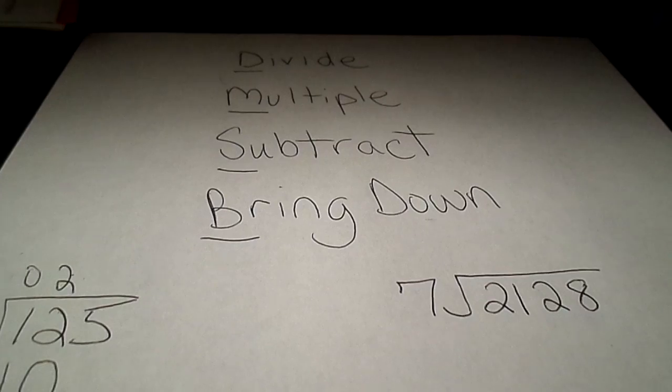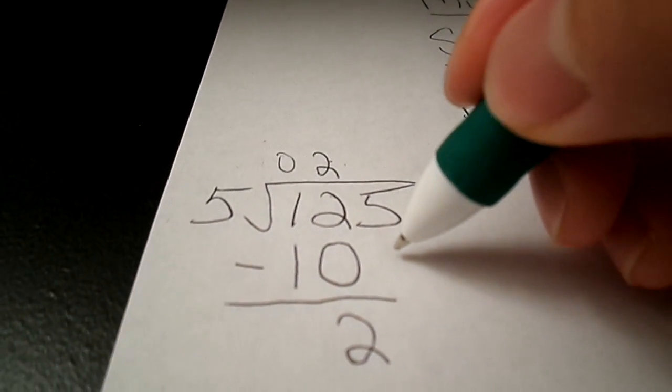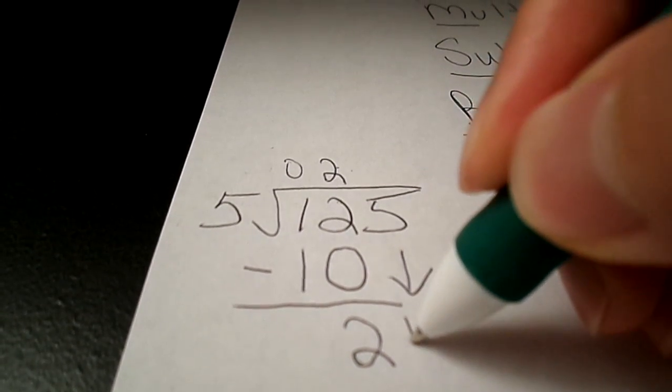Then we have our fourth and final step bring down. Bring down the five. Make it a 25.